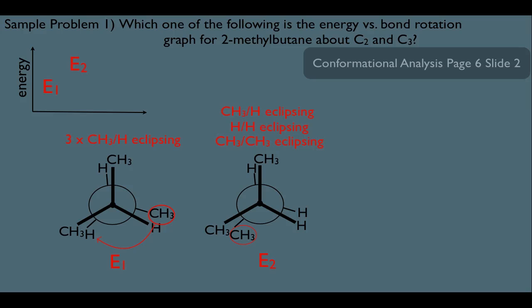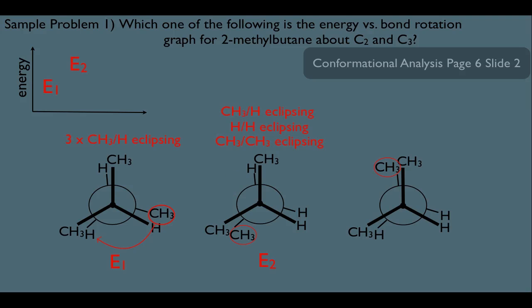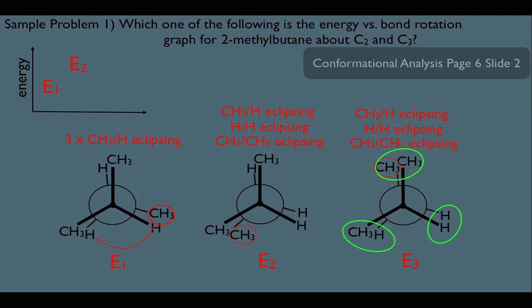Remember, we saw in a previous online lecture that there are always three eclipsed structures and three staggered structures — so when we generate the third eclipsed structure, we've considered all of them. To generate that last one, we're going to take this methyl right here and simply rotate it to the top. Let's label it E3 and do an energy analysis. We have a methyl-hydrogen eclipsing, a hydrogen-hydrogen eclipsing, and a methyl-methyl eclipsing. Notice we have the same eclipsing interactions as Eclipse Structure 2, which means E2 and E3 should be the same energy. So on the graph, E3 should be level with E2.